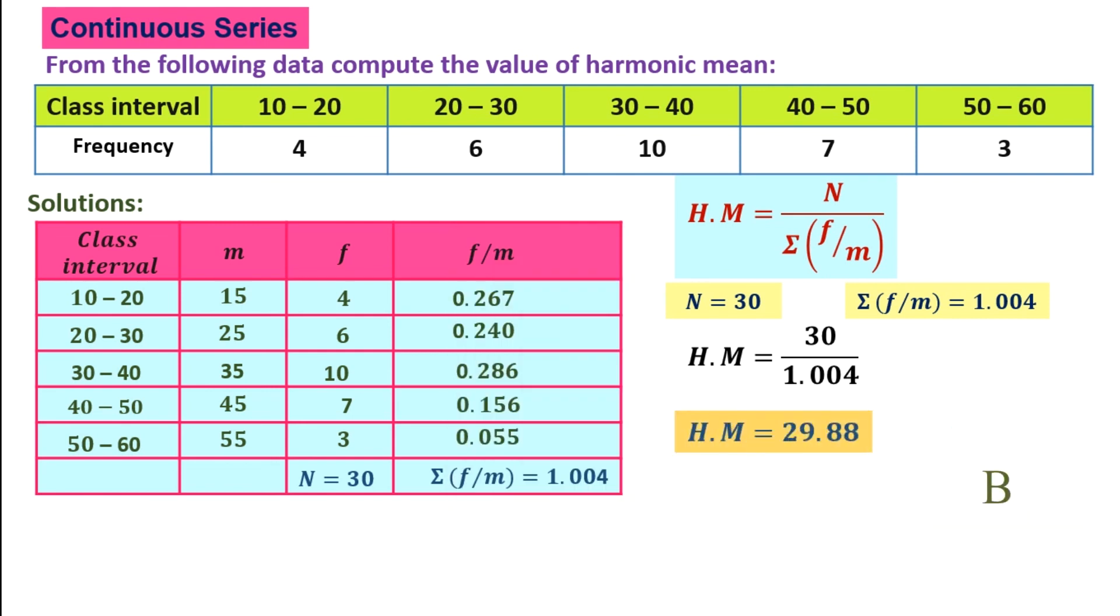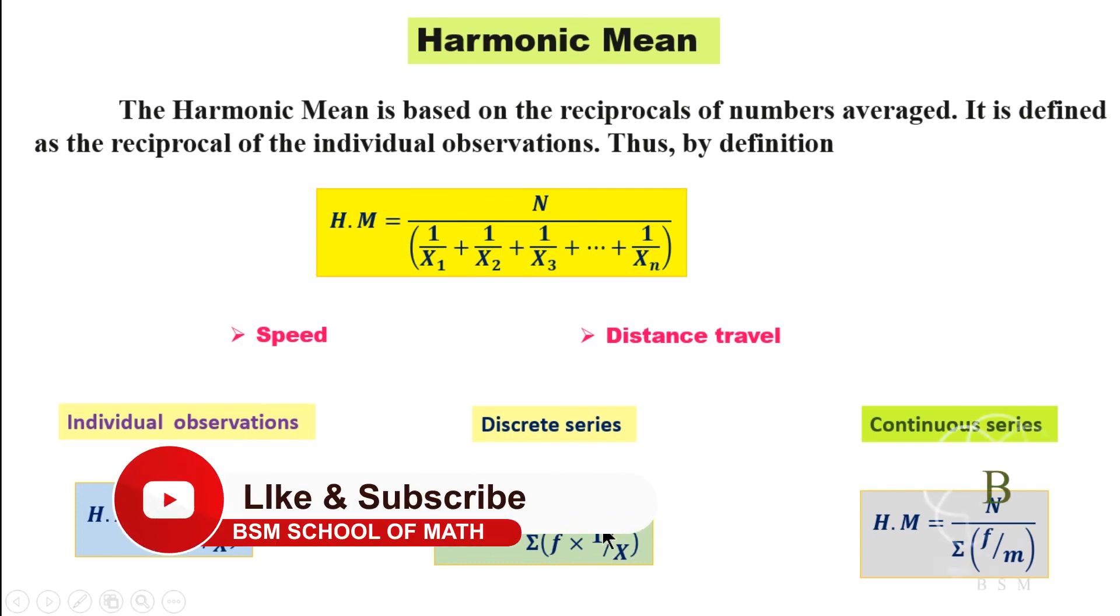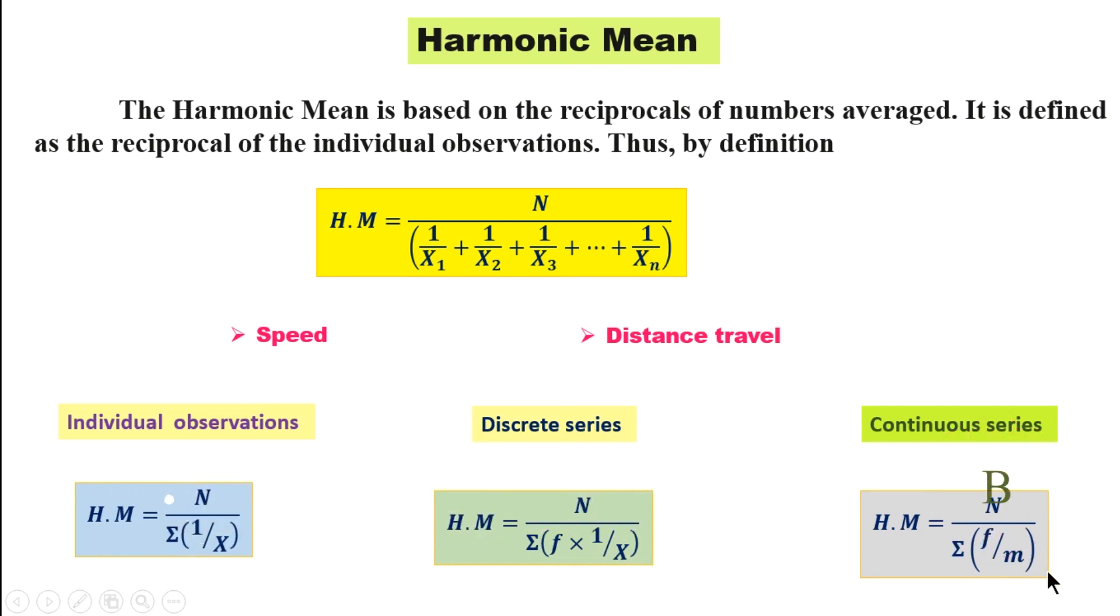So 29.88 is the harmonic mean. For individual observations it's one by X, when F is there we multiply with F. In continuous series, instead of X we use midpoint M. Thank you for watching, subscribe to my channel, see you in another video.